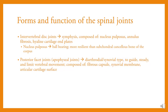Forms and Function of the Spinal Joints. Intervertebral disc joints are of the symphysis type, composed of nucleus pulposus, annulus fibrosus, hyaline cartilage, and end plates. The nucleus pulposus functions as a ball bearing and is more resilient than the subchondral cancellous bone of the carpus. Posterior facet joints are diarthrodial or synovial type, guiding and limiting vertebral movement, composed of fibrous capsule, synovial membrane, and articular cartilage surface.